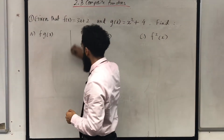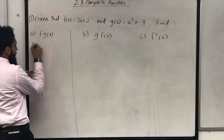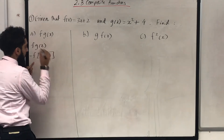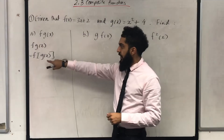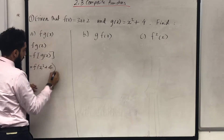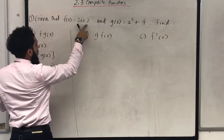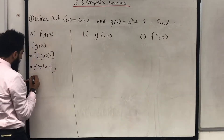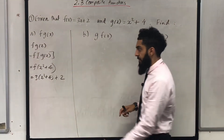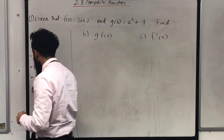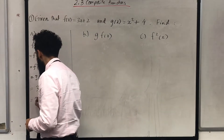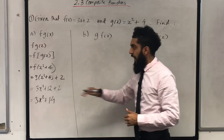Let's have a look at part a. The first step is to write down f(g(x)). This can be rewritten as f in square bracket g(x). We know that the input is g(x), so I can replace that with x² + 4. Now I need to look at the function f and replace the x with x² + 4, to obtain 3(x² + 4) + 2. Expanding and simplifying gives 3x² + 12 + 2, which simplifies to 3x² + 14. That there is your f(g(x)).